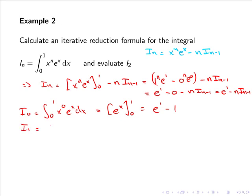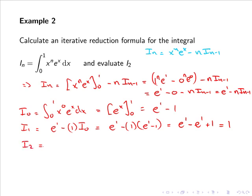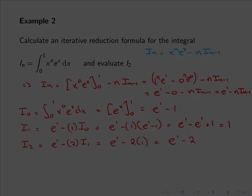Now i₁ equals e minus 1 times i₀, so we have e minus e plus 1, simply giving us 1. And then finally i₂ equals e minus 2 times i₁, so e minus 2 times 1, which is simply e minus 2.